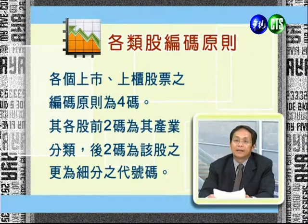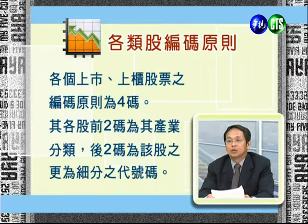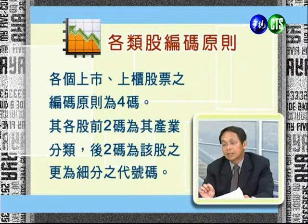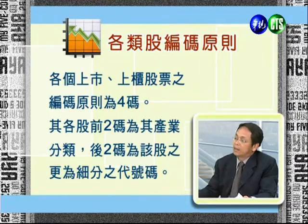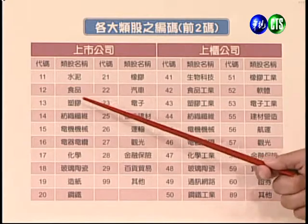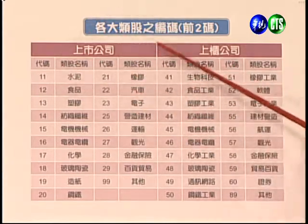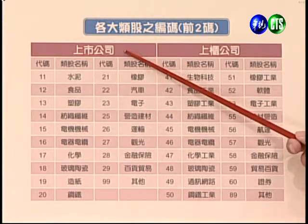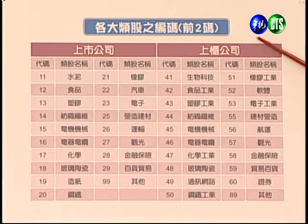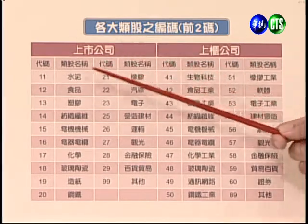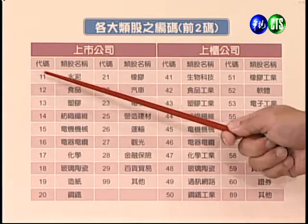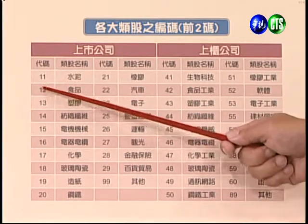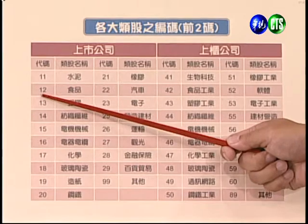接下來介紹各類股的編碼方式。不像美國用英文字母代號，如蘋果AAPL、雅虎YHOO，台灣比較像日本，用號碼做代號。每一個上市上櫃公司的編制號碼以四碼為原則，前兩碼代表產業分類，後兩碼是該股更細的分類代號。上市公司主要代碼是1開頭和2開頭的部分，包括水泥1開頭，食品12，塑膠13，紡織14，電機機械15，電器16，依此排下去。